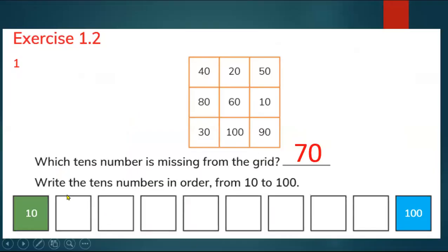Okay the next question. You have to order tens from 10 to 100. Now look at this grid. There is 10. It's already 10 here. What is the next 10?